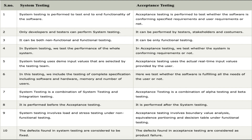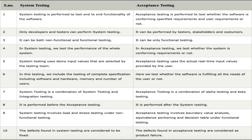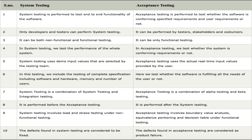Point six: system testing includes testing of the complete specification including software, hardware, memory, and number of users, whereas acceptance testing checks whether the software fulfills all the needs of the user. Point seven: system testing is a combination of system testing and integration testing, whereas acceptance testing is a combination of alpha testing and beta testing.